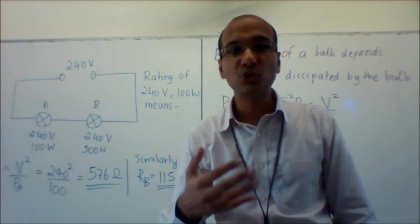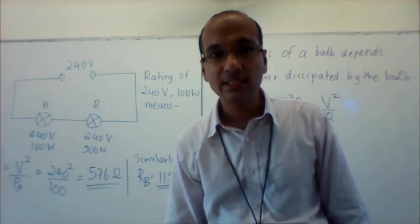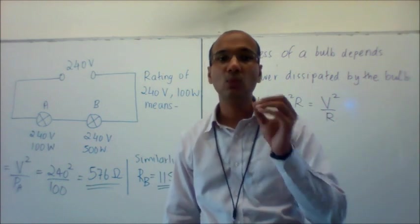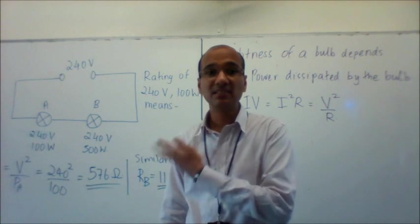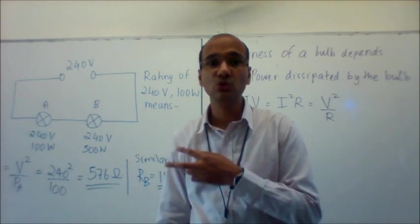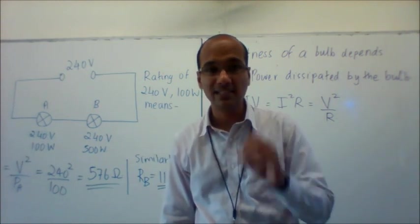So the easiest approach is to first find the current flowing through both bulbs. Being a series circuit, the current flowing through both bulbs will be exactly the same.